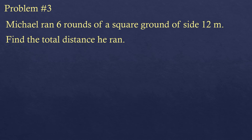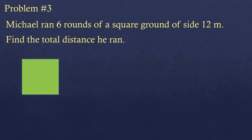Problem Number Three: Michael ran six rounds of a square ground with a side of 12 meters. Find the total distance he ran. This involves a square, so we draw a square with each side equal to 12 meters. Note that the question asks for total distance, not just the perimeter, since he ran six rounds.